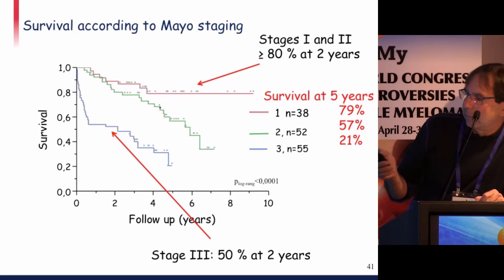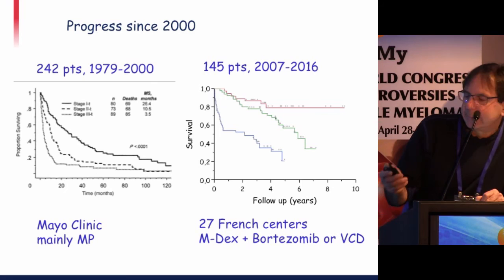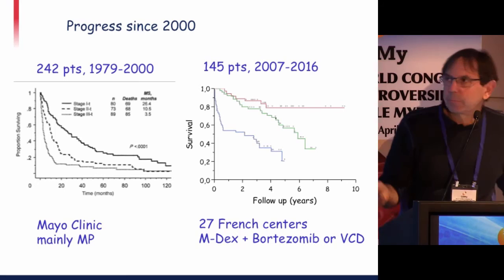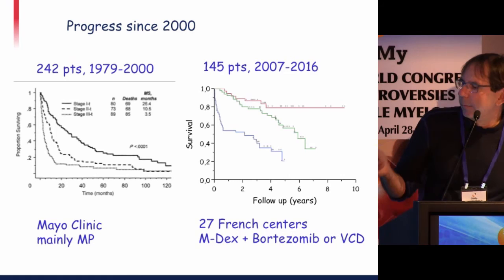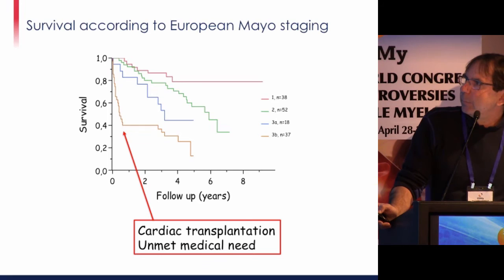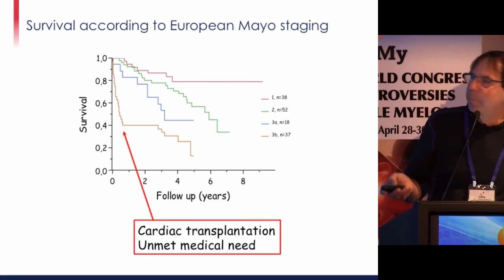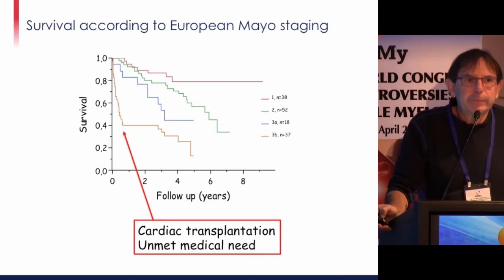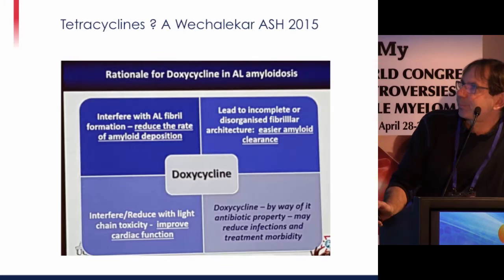We have clearly made huge progress in this disease. When the Mayo staging paper was published in 2000, patients were mainly treated with MP, and now survival is clearly much better. However, for patients in the European classification with NT-proBNP above 8,500 nanograms per liter, the outcome is really poor. These patients may need cardiac transplantation. This remains a clear unmet medical need.